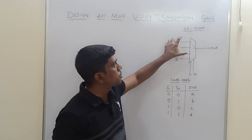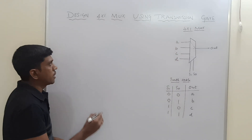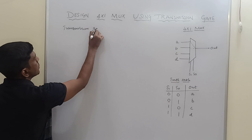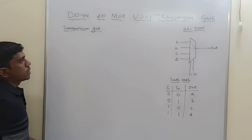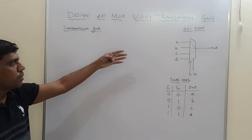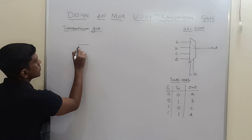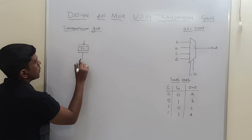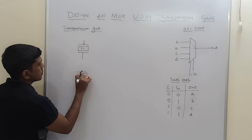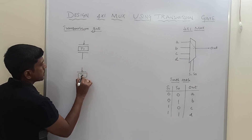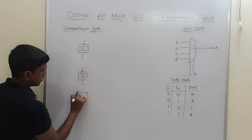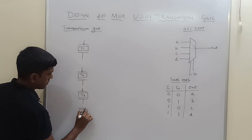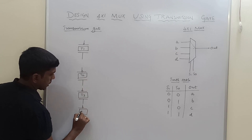Now I am going to convert this 4x1 multiplexer structure in terms of transmission gates. In this transmission gate structure, I will draw 4 transmission gates for the 4 inputs. This is transmission gate 1, transmission gate 2, transmission gate 3, and transmission gate 4.